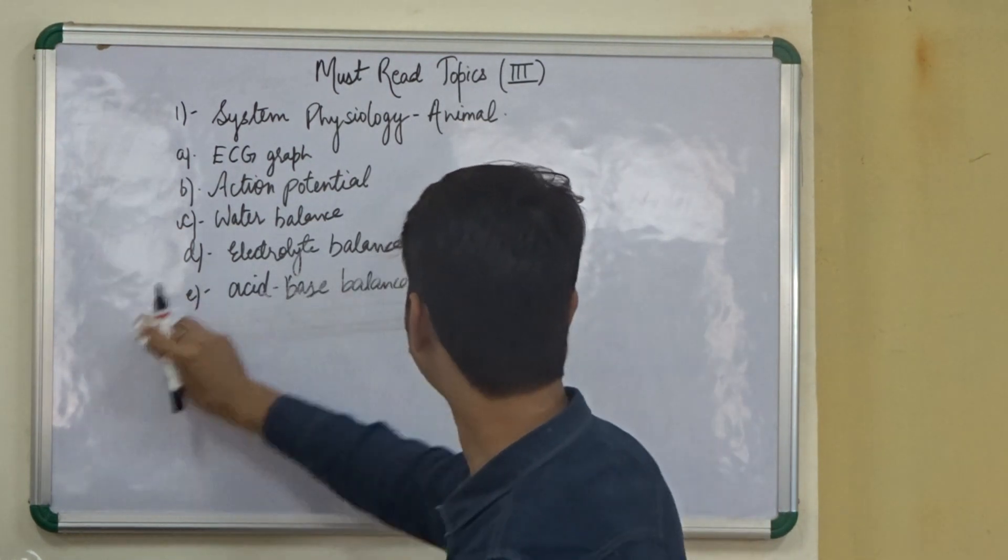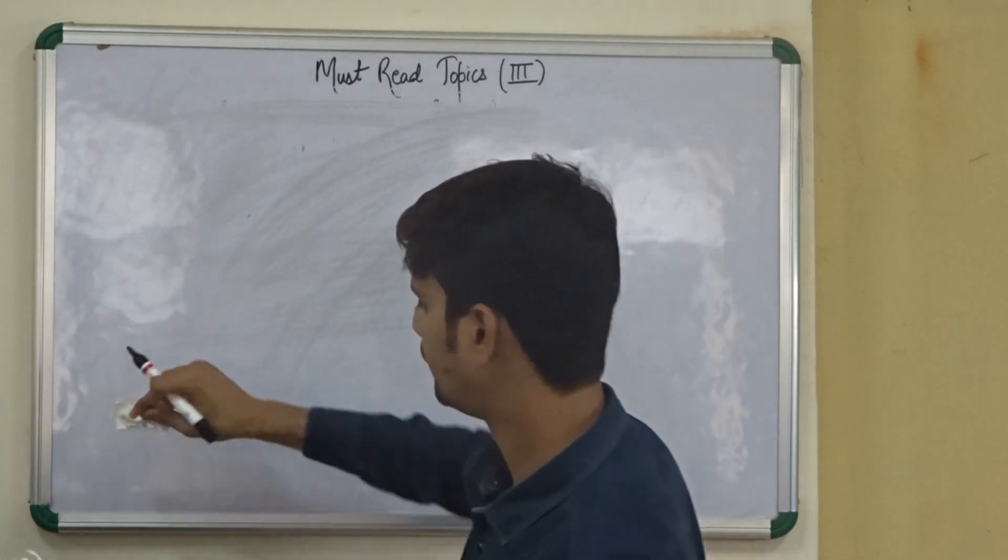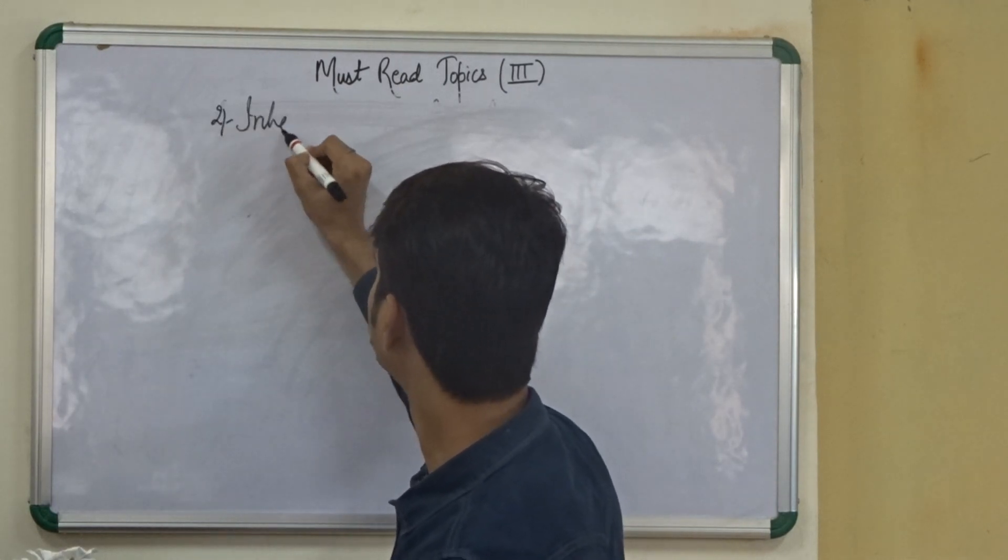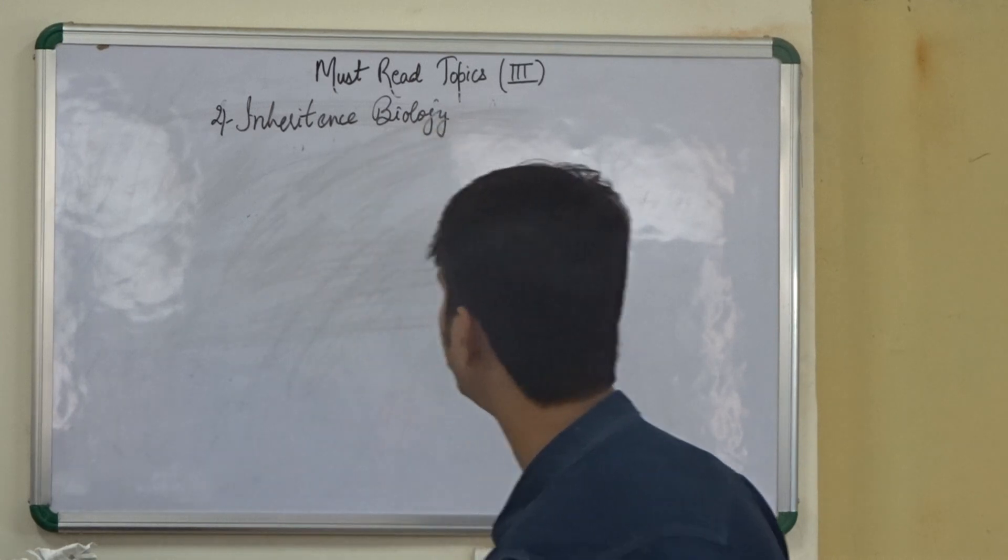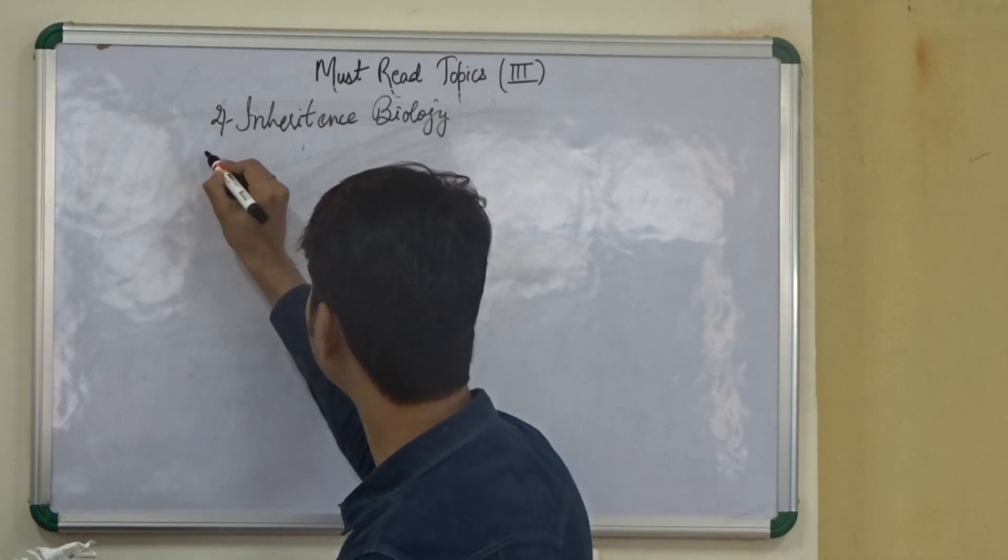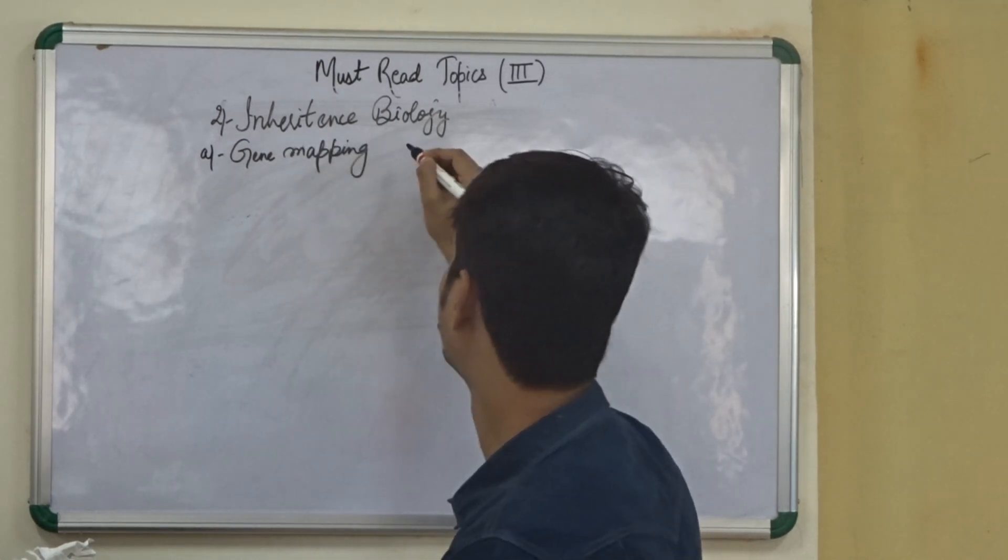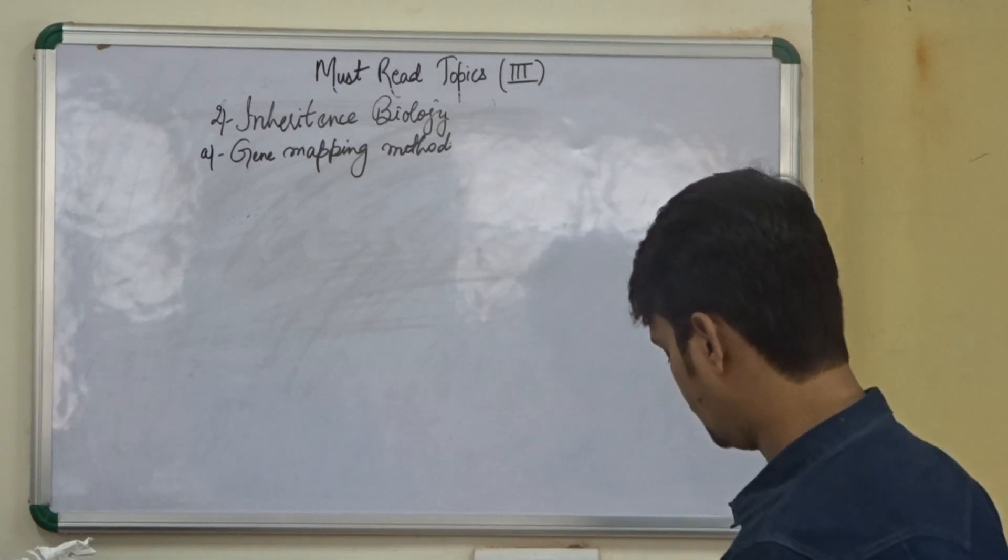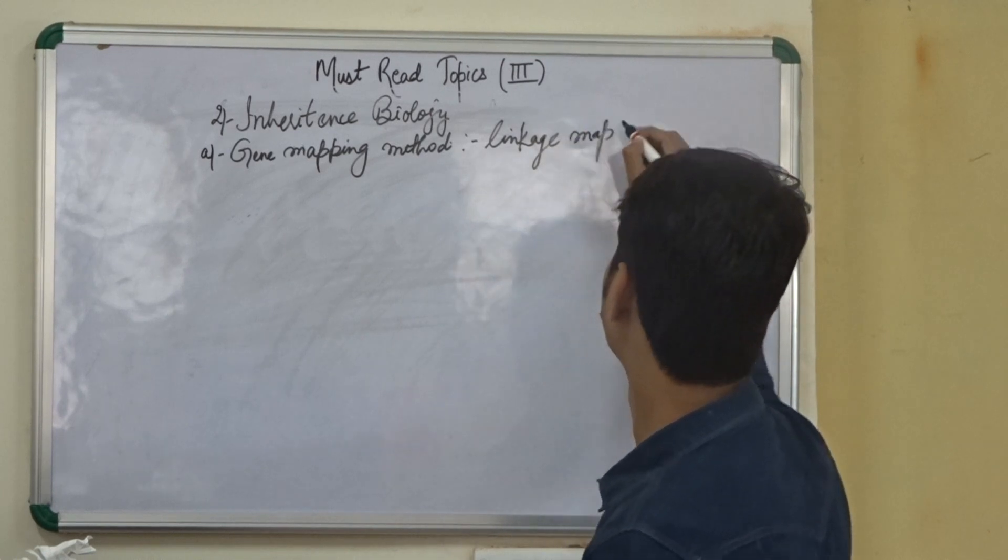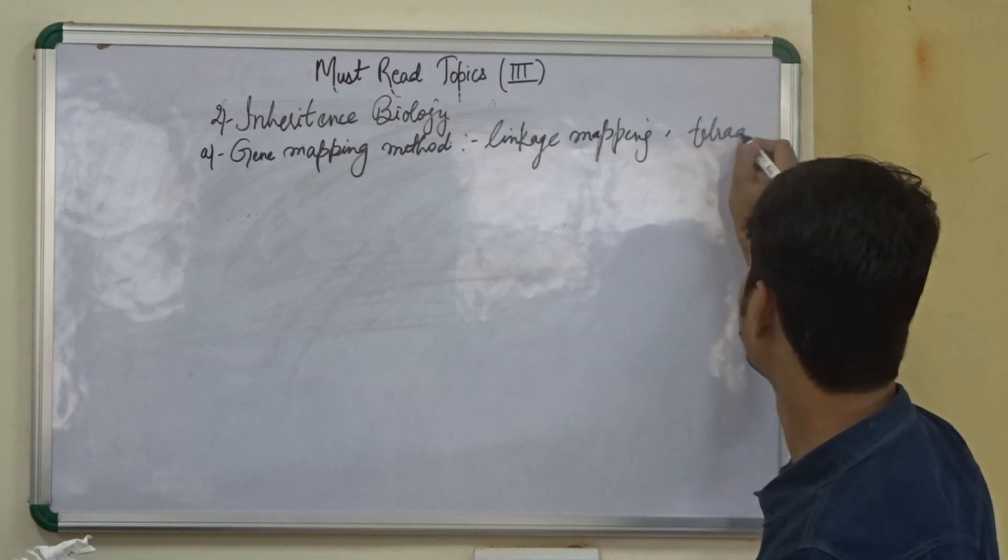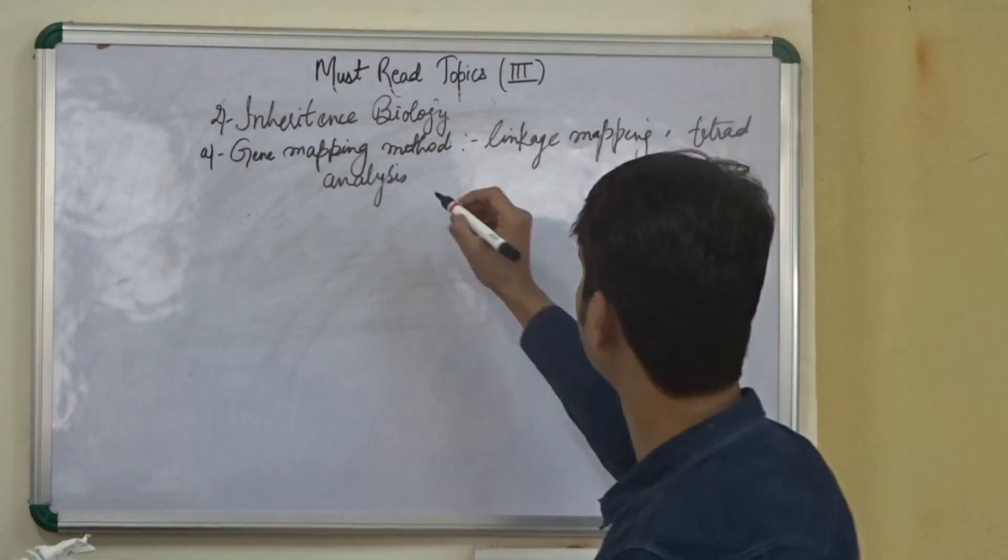Now moving on to the next part, we have inheritance biology. So in inheritance biology we need to know about the gene mapping methods. In this there is linkage mapping, tetrad analysis, and complementation test.